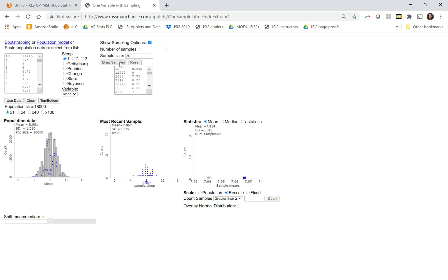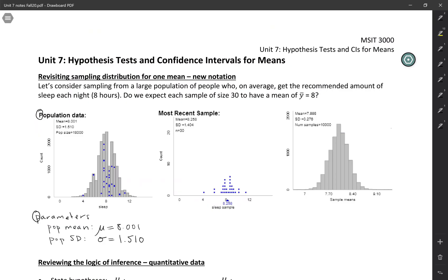And of course, every sample of size 30 that you take has slightly different values, because it has different individuals that get selected. And so you get a different sample mean and standard deviation each time. So this middle picture here is showing one possible sample that you could get from this population. And we have the mean and the standard deviation of that sample.